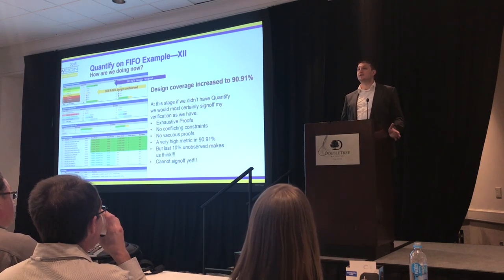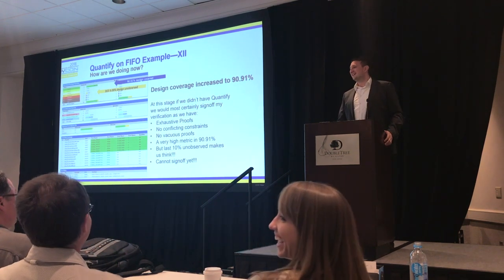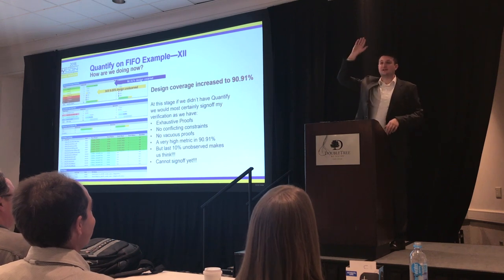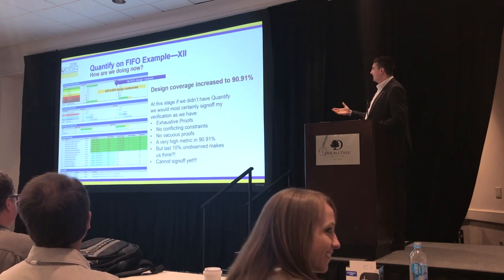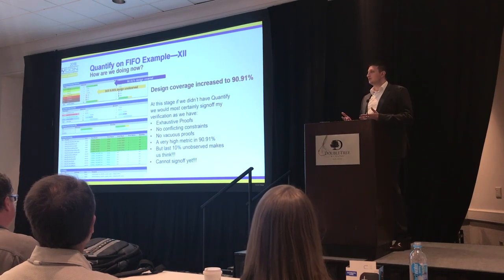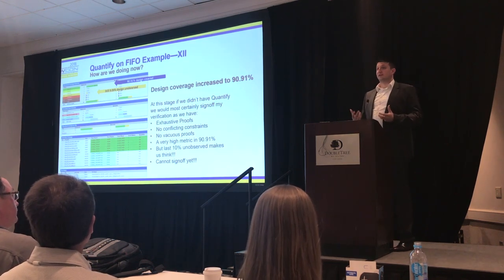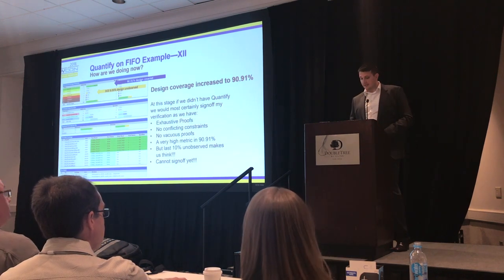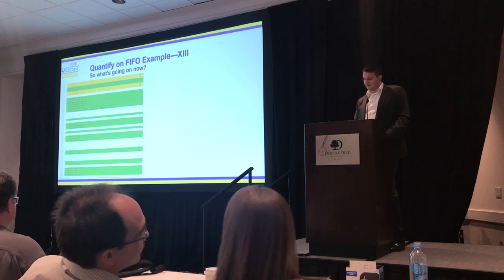Can I have a show of hands — who has signed off with 90% coverage before? At this stage, if we didn't have Quantify, we would most certainly sign off, because we've done enough checks, we don't have any vacuous proofs, all our assumptions are okay, we don't have over-constraining — it's a very high metric. But since this is observation coverage, you really should look into what it's telling you. And what it's telling us in this case is that there is still some yellow part on the handshake for the FIFO being full.